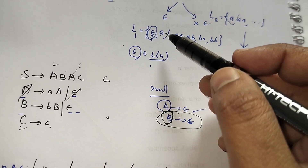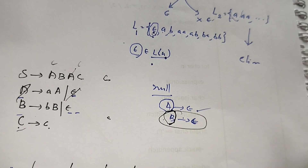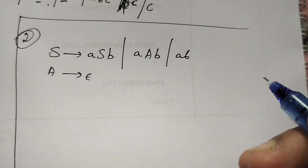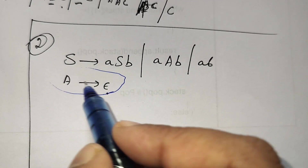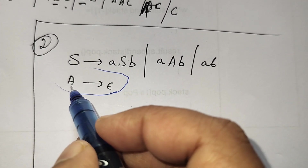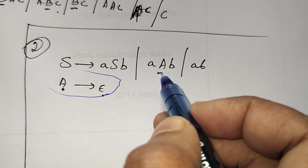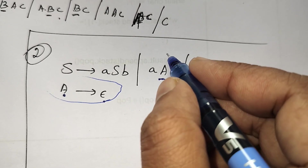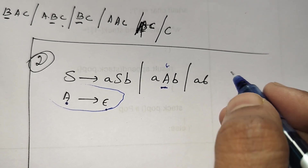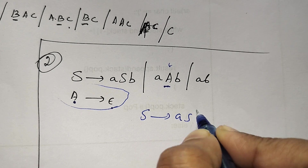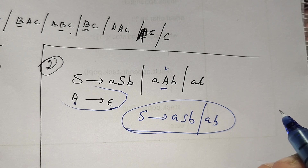In the next example, there is only one null production. To eliminate it, find the nullable variable in the right-hand side and substitute it with epsilon. Here, A appears in the right-hand side; replacing A with epsilon gives 'ab', which is already present. So the final grammar production becomes S → aSb | ab, after eliminating the nullable variable.